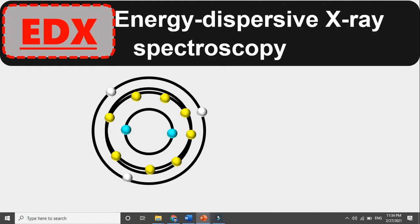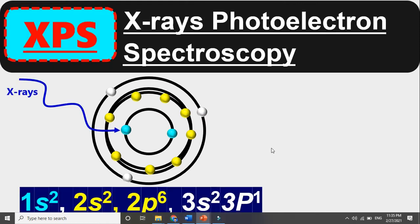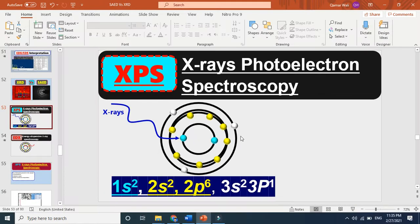Now if you look at EDX — energy dispersive X-ray spectroscopy — here we basically replace an electron. Another electron falls down and we generate X-ray. So we remove an electron, another electron falls and we get X-ray. In EDX, we detect X-ray photons. In XPS, the first case, we detect electrons.